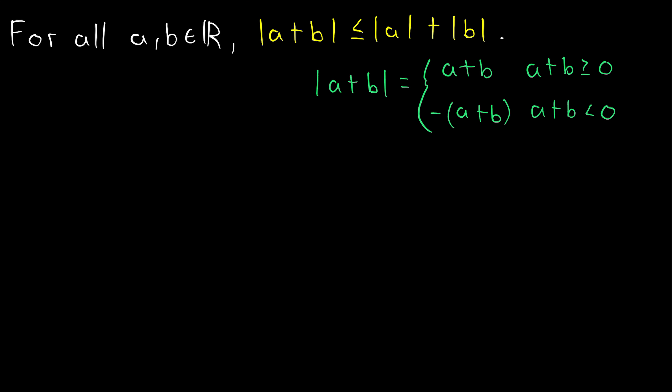Thus, if we can show that both a plus b and negative a plus b must always be less than or equal to the absolute value of a plus the absolute value of b, that will complete the proof.